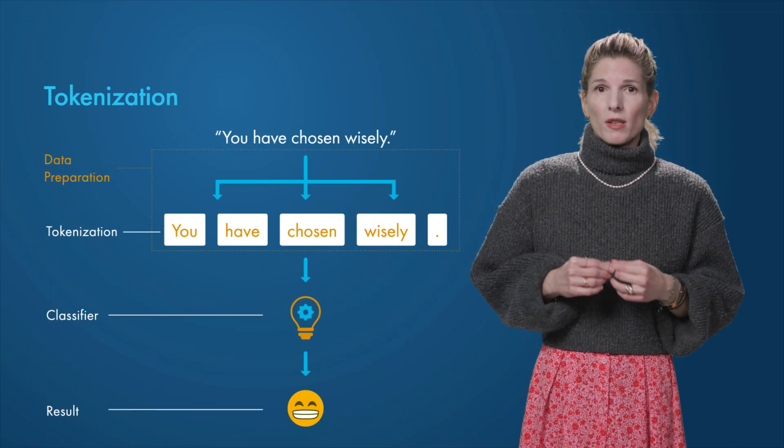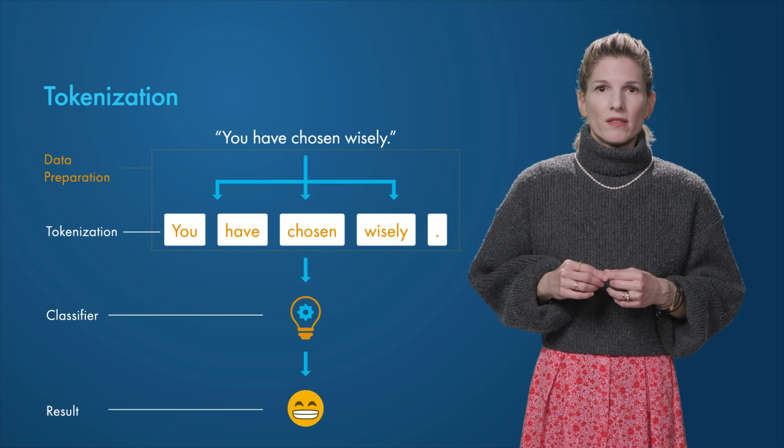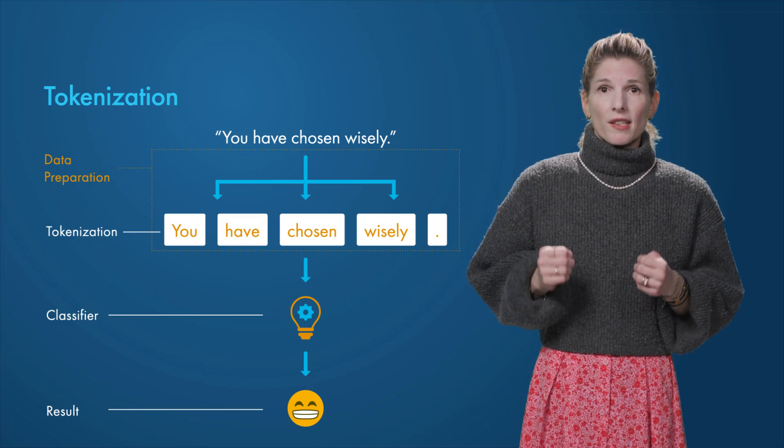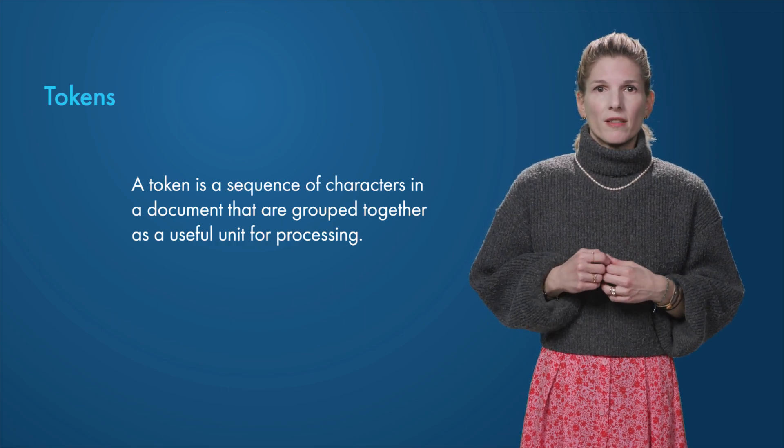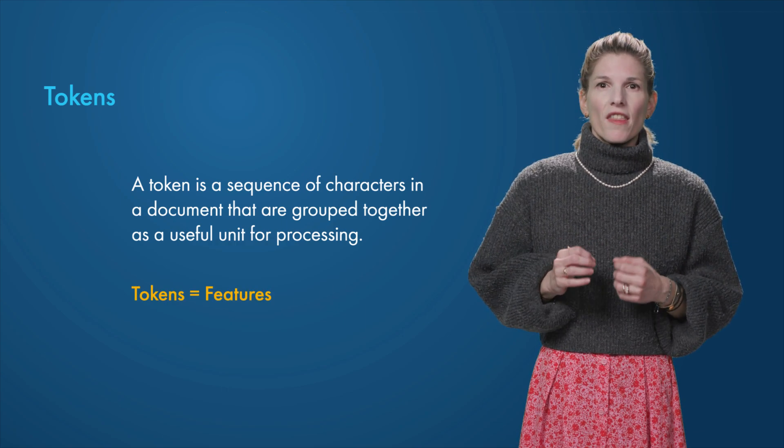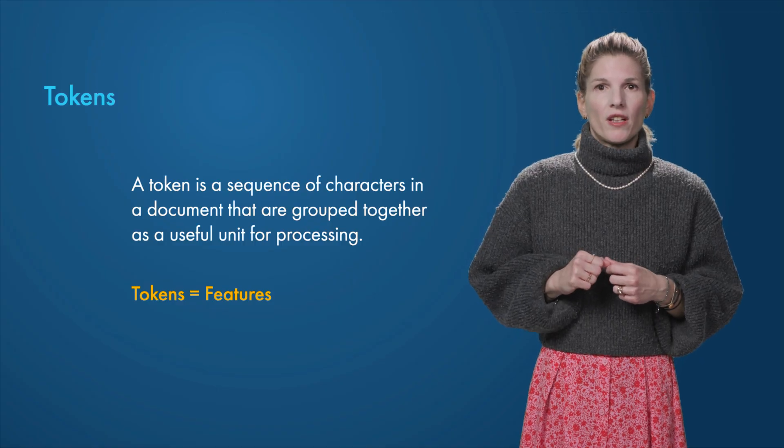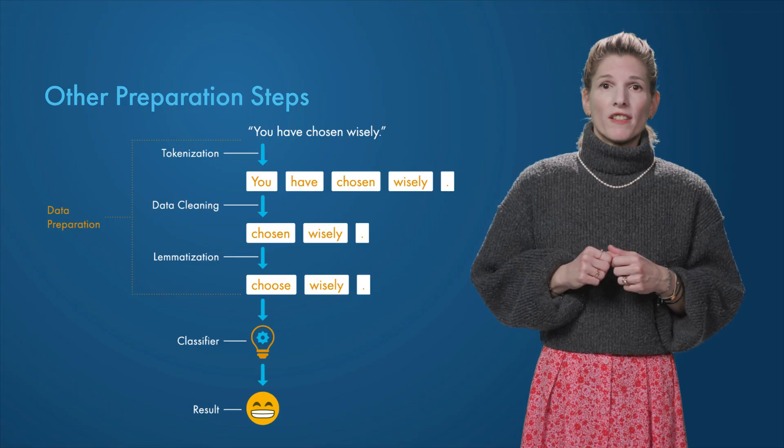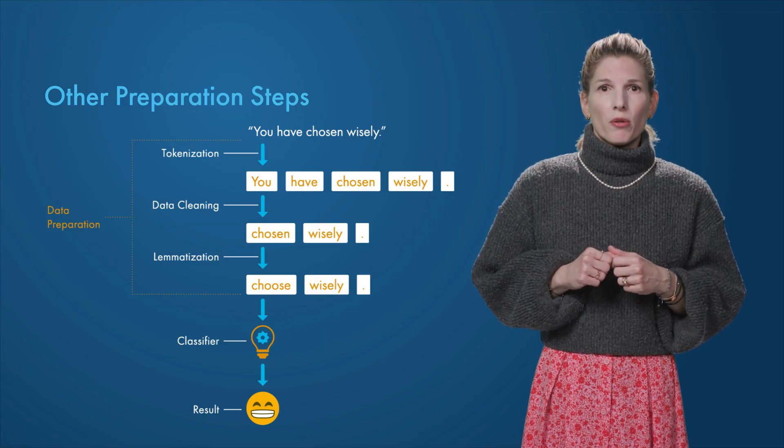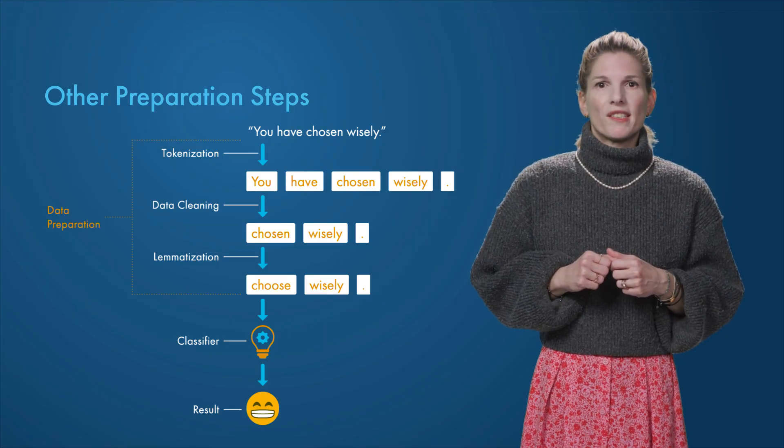A common data preparation step is tokenization, that is, representing the input text as a collection of tokens. A token is a sequence of characters that is useful for processing. Tokens are essentially the features that you feed into the classifier. How you prepare your data depends on the type and predictive power of your classifier, so you might need to do additional preprocessing.